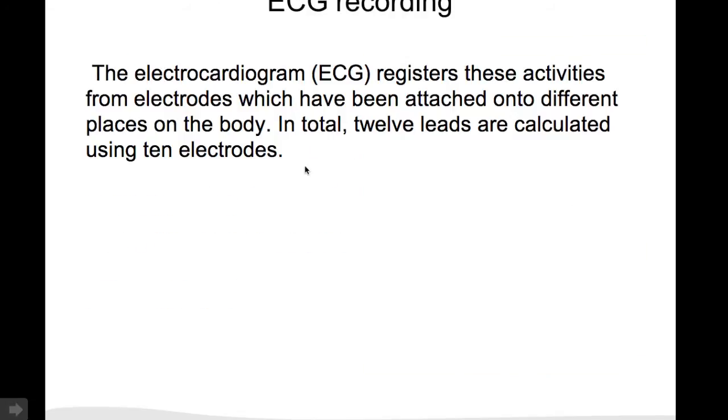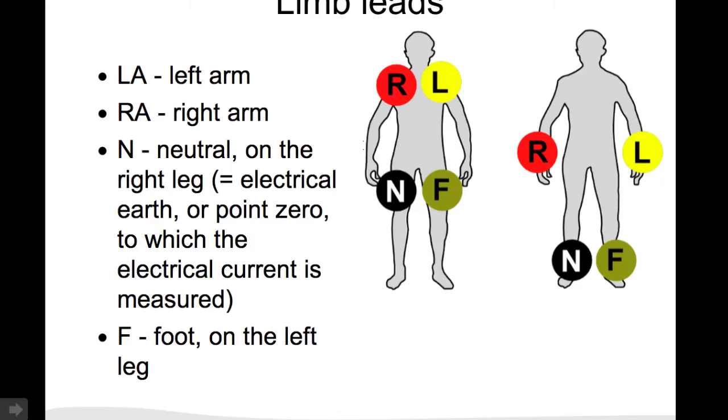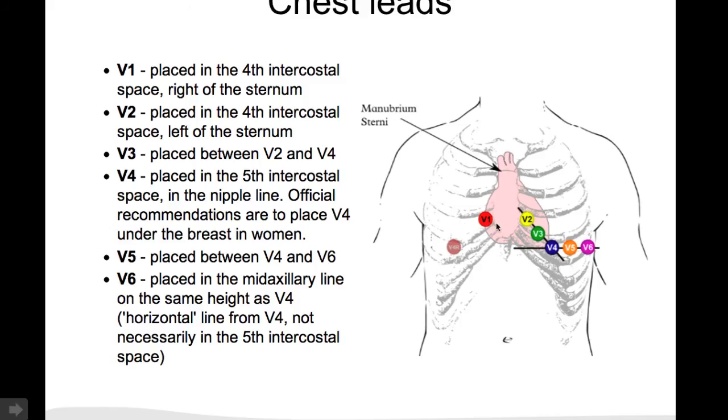And the ECG records these activities from electrodes which are attached on different parts of the body. You have the right and left arm, the neutral electrode on the right leg, and the foot electrode on the left leg. The chest leads are V1 to V6. V1 on the right of the sternum in the fourth intercostal space. V2 on the left of the sternum. V4 in the mid-clavicular line in the fifth intercostal space. V3 is in between V2 and V4. V6 is in the mid-axillary line horizontal from V4, and V5 is in between.